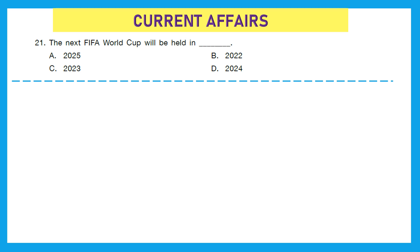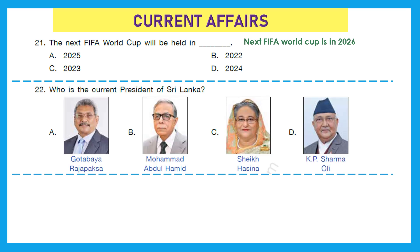Moving to our next section — Current Affairs. As I always mention, be updated on things happening around the world. Question 21: The next FIFA World Cup will be held in? Because this is a previous year question paper, assuming we are appearing for the exam in 2023, the next FIFA World Cup will be held in 2026. Question 22: Who is the current president of Sri Lanka? The current president of Sri Lanka in 2023 is Ranil. Please choose the right option if this question comes.